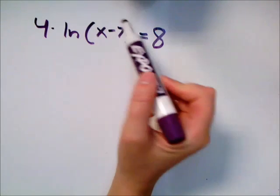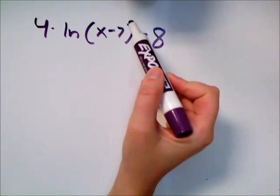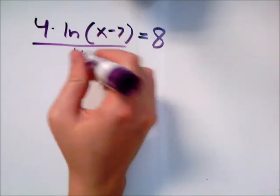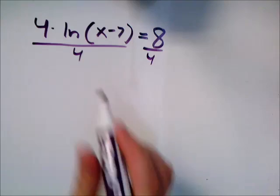Now if we're thinking properties, we could bring that in as x minus 7 to the fourth. But since it's multiplied in an equation, what might be easier is just divide both sides by 4.